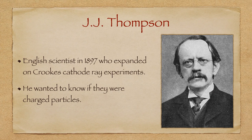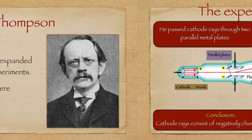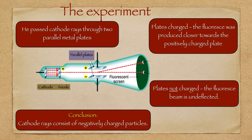Not long later, JJ Thomson expanded on Crookes' experiments. He wanted to know if the particles had a charge. His experiment was similar to Crookes', however he attached two plates in the vacuum tube. When he passed the cathode rays in between uncharged plates, they hit the fluorescent screen undeflected. However, when he charged the plates using electricity and repeated the experiment, he found that the cathode rays were deflected towards the positive plate. He concluded that cathode rays were negatively charged, as like charges repelled like charges.